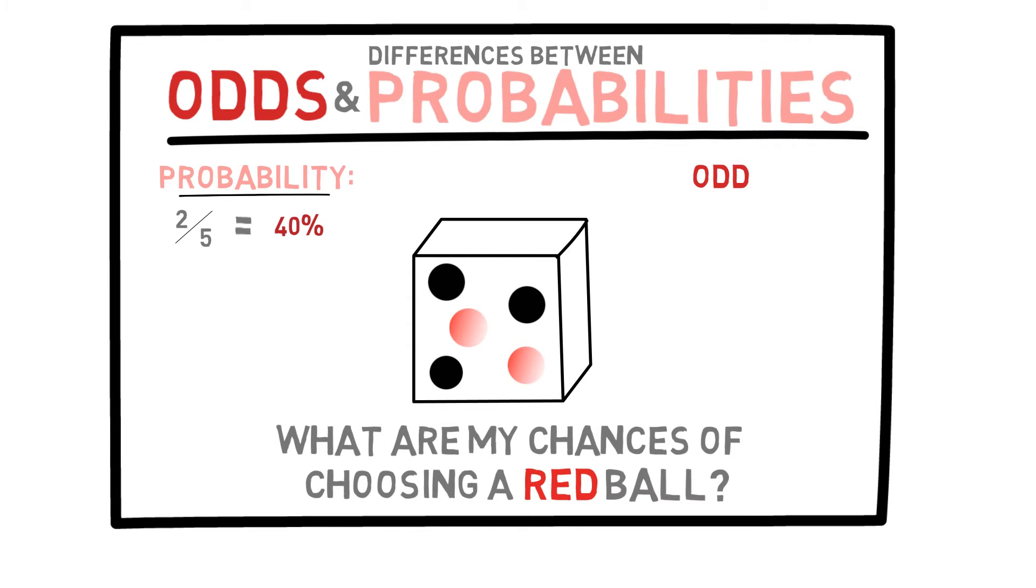Now, when talking about odds, we are really talking about a pair of numbers. In this case, the odds of choosing a red ball are the number of red balls to the number of non-red balls. So in this case, it would be two to three because there are two red balls and three non-red balls.